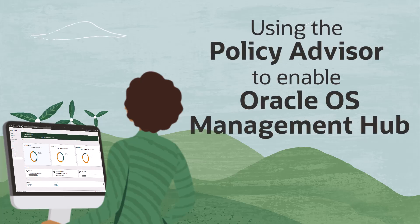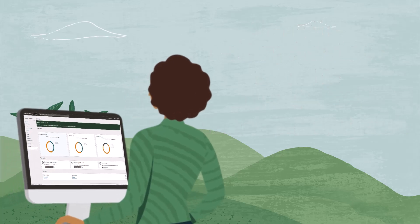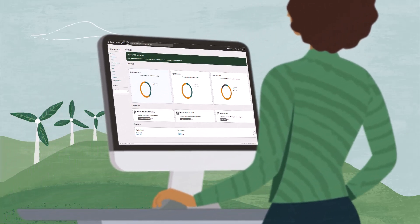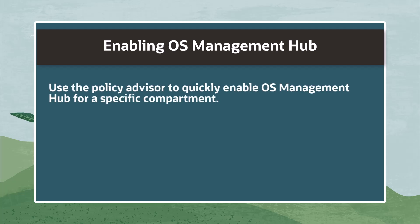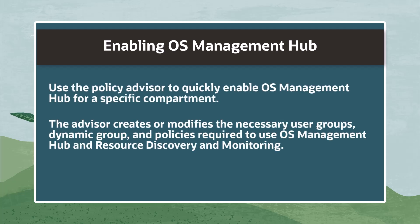In this video, we will enable Oracle OS Management Hub by using the Policy Advisor to set up the required Identity and Access Management policies in Oracle Cloud Infrastructure. This Policy Advisor offers a quick method for enabling OS Management Hub. The Policy Advisor automates the creation of user groups, a dynamic group, and the policy and its policy statements for a designated compartment.